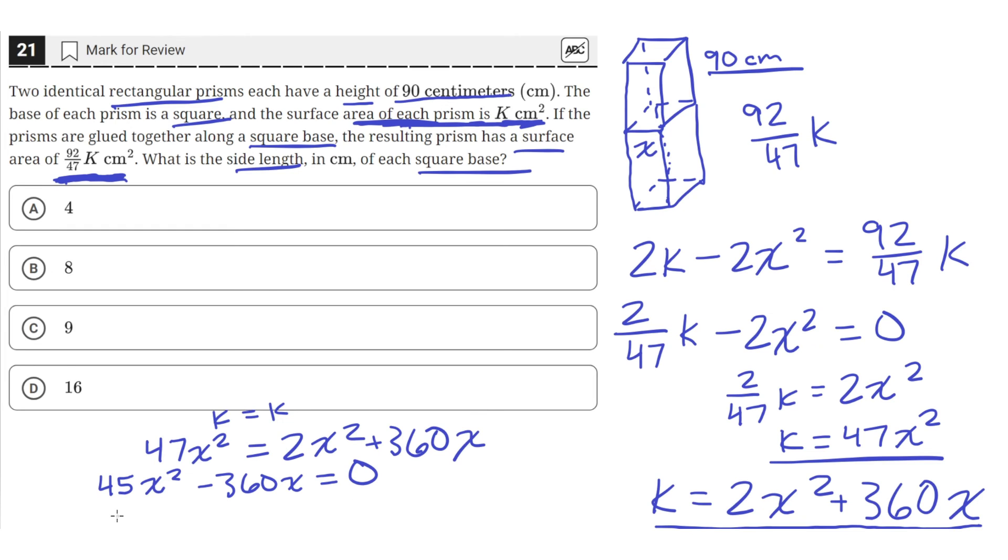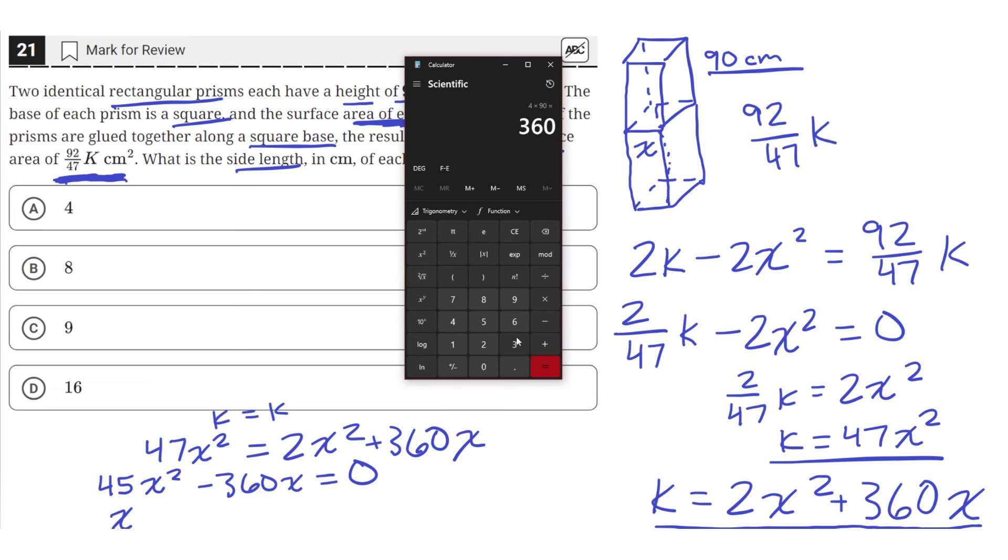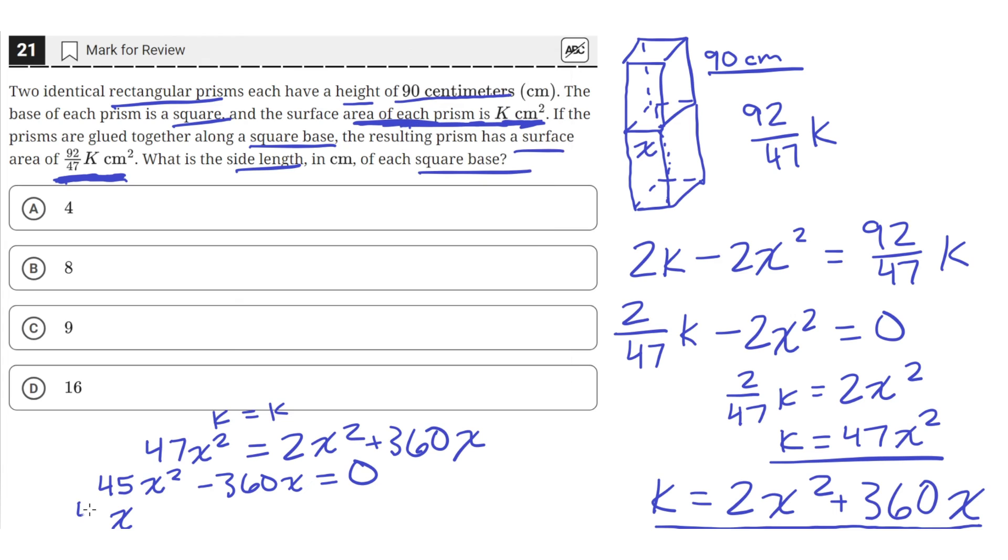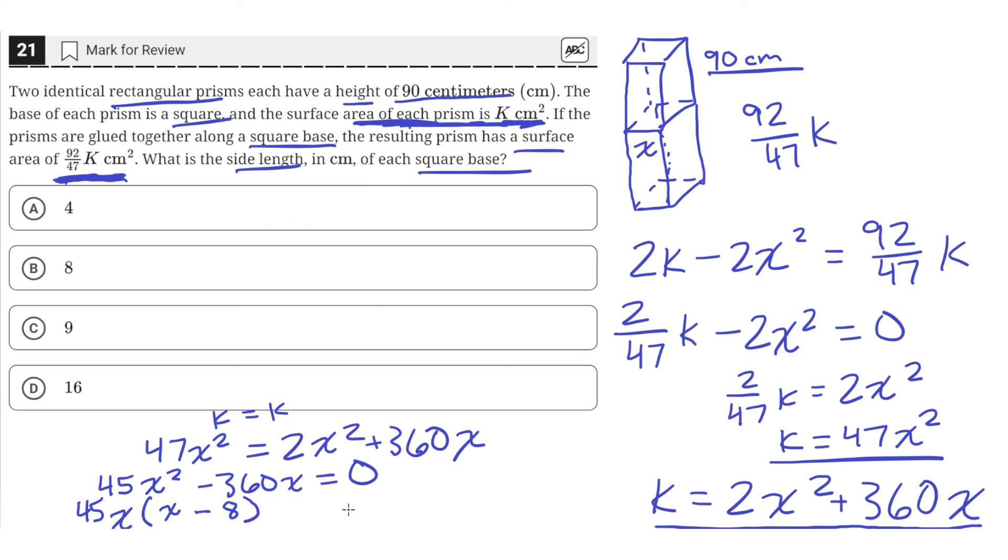From this we can factor out an x. And let's see if we can factor out a constant as well. Is 360 divisible by 45? It is. So we can also factor out a 45. Then we'll just be left with an x here and then a negative 8 here, because 45 times 8 is just equal to 360. Then this will be equal to 0.